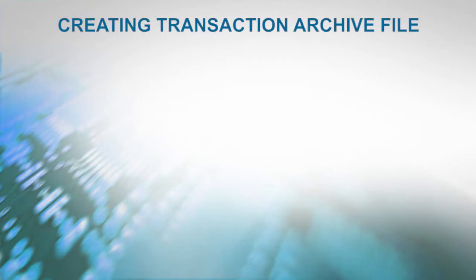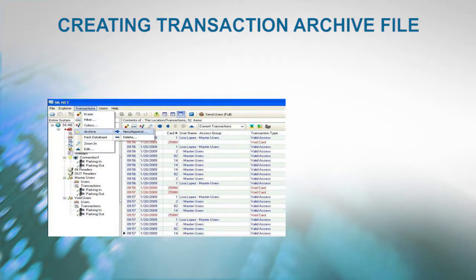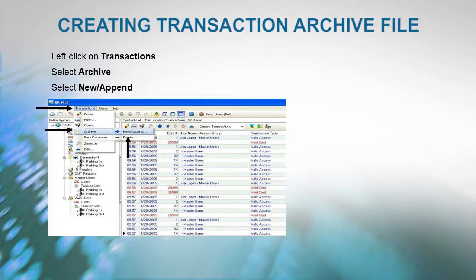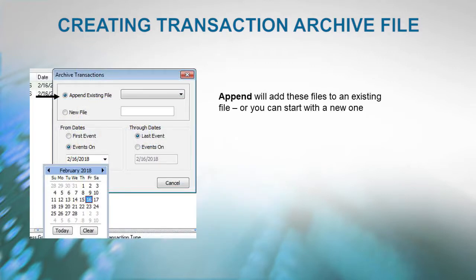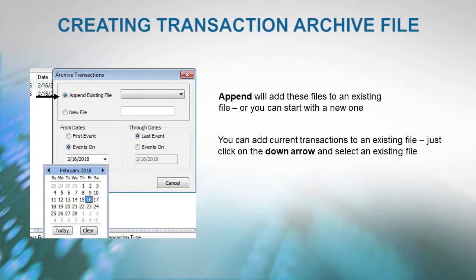To create a transaction archive file, left-click on Transactions, select Archive, then select New or Append. Append will add these files to an existing file, or you may want to start with a new one. To add current transactions to an existing file, just click on the down arrow and select an existing file.